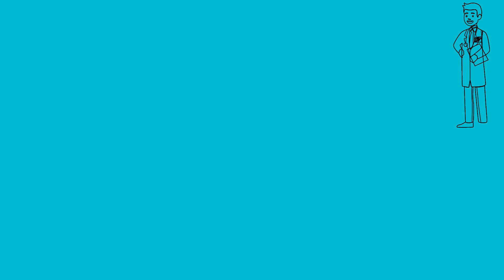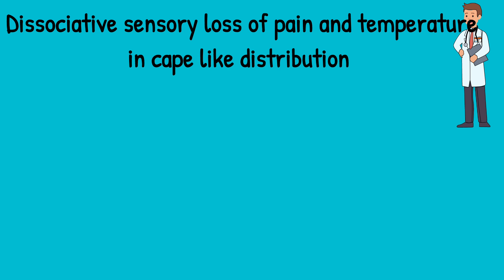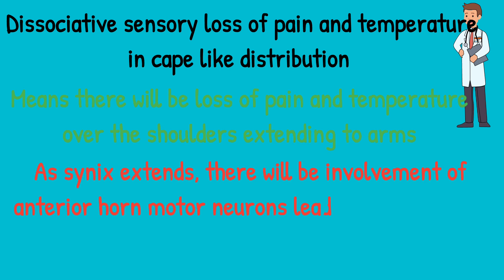What could be the features? The key feature is dissociated sensory loss of pain and temperature in a cape-like distribution — meaning loss of pain and temperature extending from the shoulder to the upper arms bilaterally. Other sensory modalities like vibration, proprioception, and touch are intact and are not affected by syringomyelia.